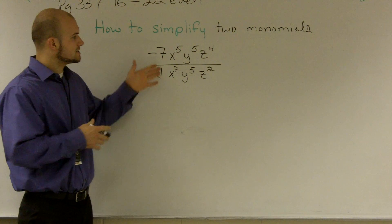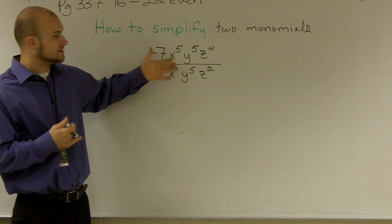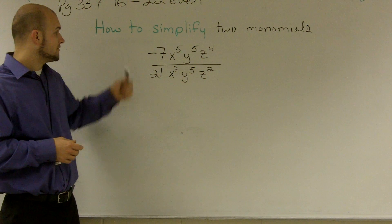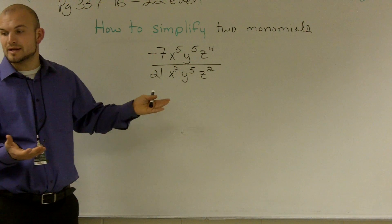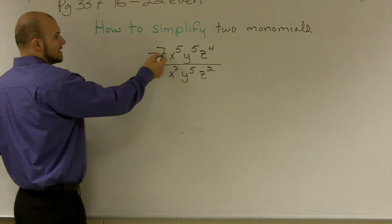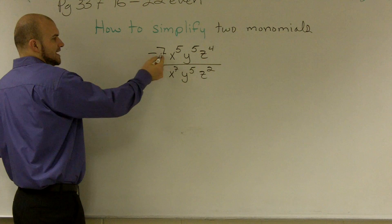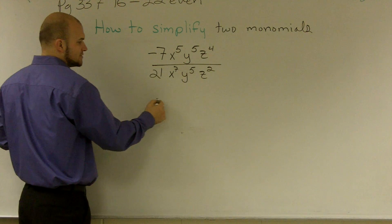So again, what we're going to do is I'm only going to work with the numbers that have the same bases. Therefore, my 7 and my 21, those are both my numbers. So if I look at this, I have negative 7 divided by 21. I can simplify that to a negative 1 third.